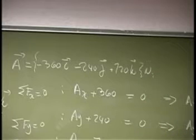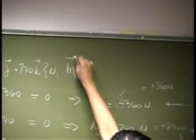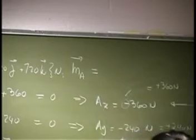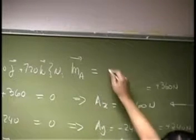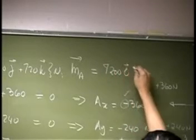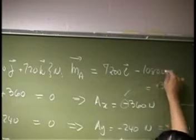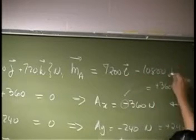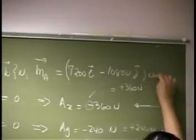So that is one force in vector form. And then you have M_A. And that should be basically from here. It is 7200 times I. Then you have a negative 10800 times J. This thing in Newton meters.